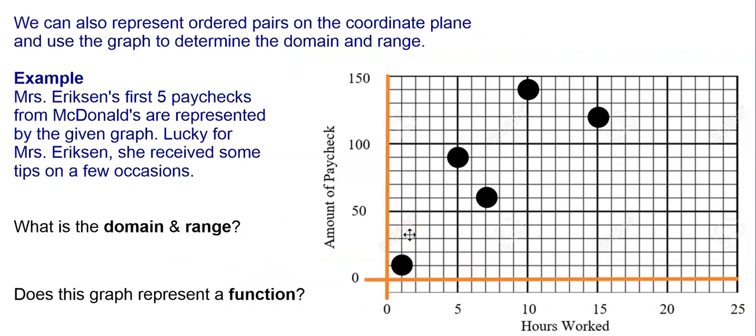Now, relations can be represented in different ways. In the past example, it was as a function. Before that, it was a set of values. Here it is ordered pairs on the coordinate plane. The graph represents how many hours Ms. Erickson worked and how much she got paid. So, for example, the first one was 1 hour worked and $10 earned. The second one is 5 hours worked and $90 earned. The third one is 7 hours worked, $60 earned. The next is 10 hours worked and $140 earned. And then finally, we have 15 hours worked and $120 earned.